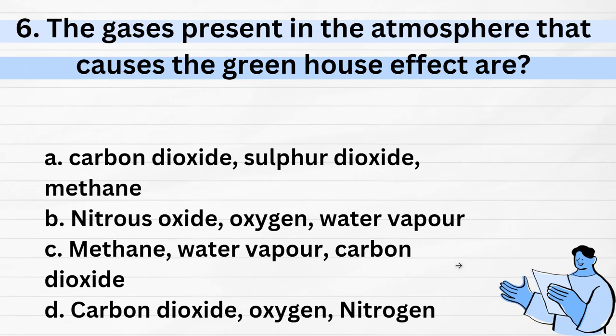Sixth question: Which gases present in the atmosphere cause the greenhouse effect? Options: A, carbon dioxide, sulfur dioxide, methane; B, nitrous oxide, oxygen, water vapour; C, methane, water vapour, carbon dioxide; D, carbon dioxide, oxygen, nitrogen. The answer relates to the key greenhouse gases including methane, water vapour, and carbon dioxide.